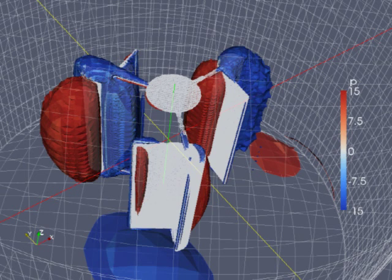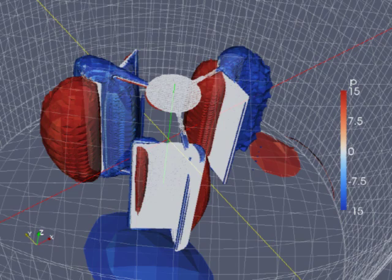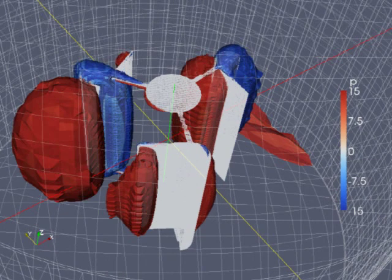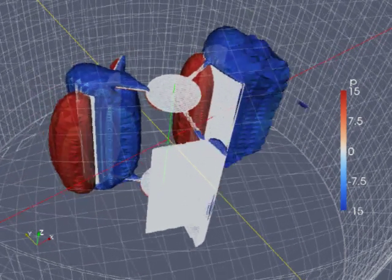In this one, the red bubble represents where the air pressure is 15 pascals higher than normal, and the blue bubble represents where it's 15 pascals lower than average.